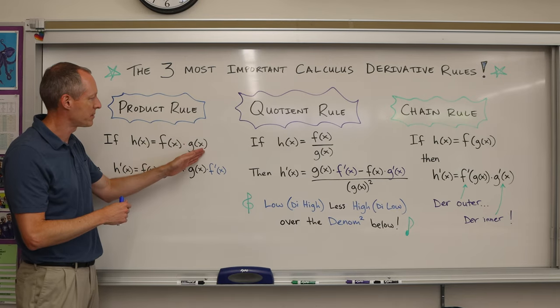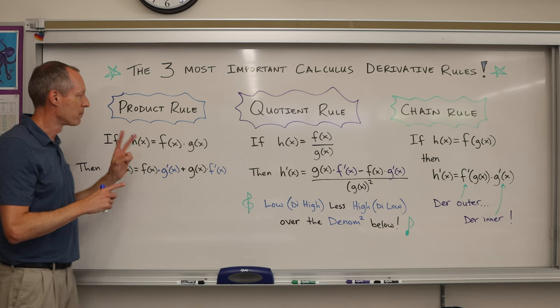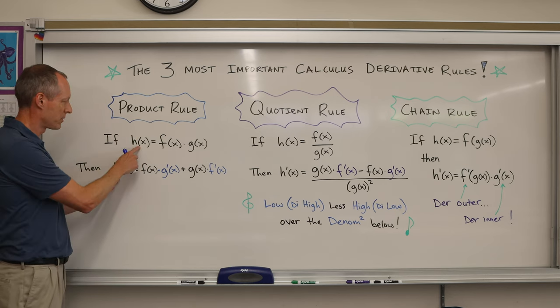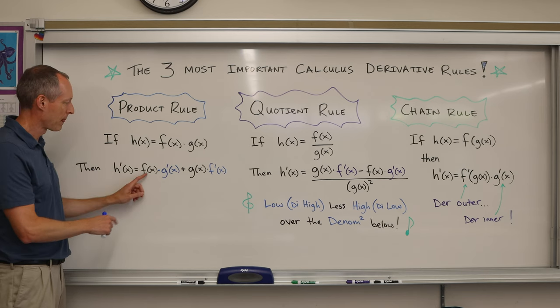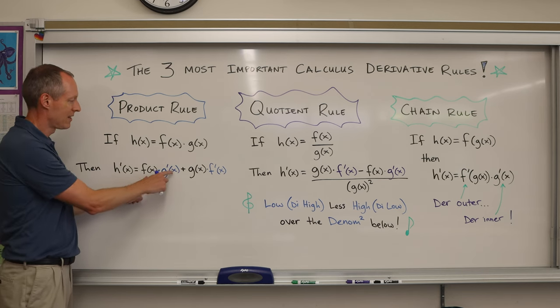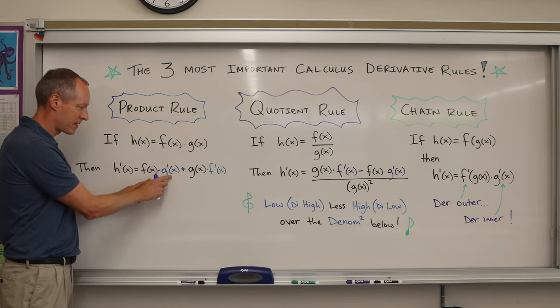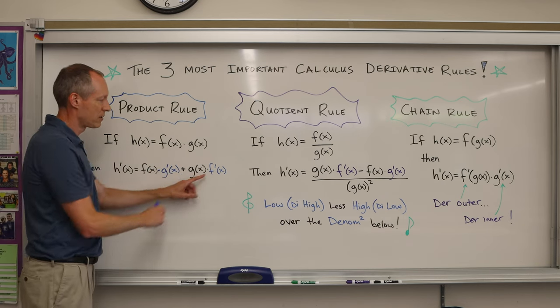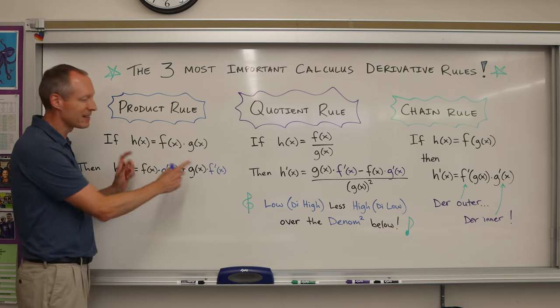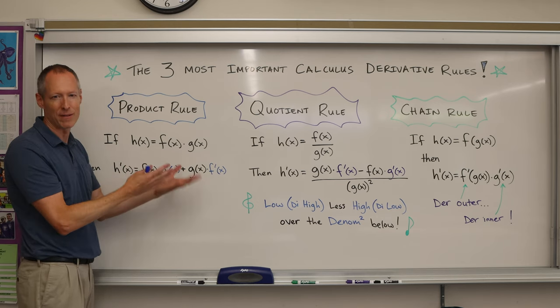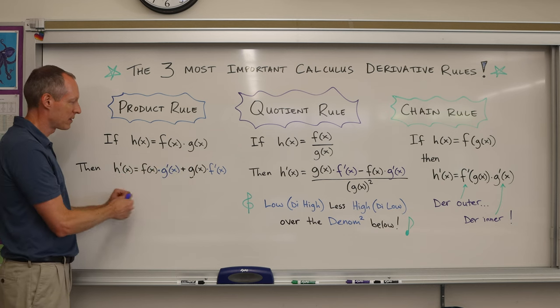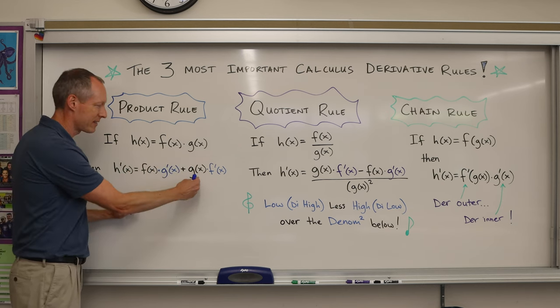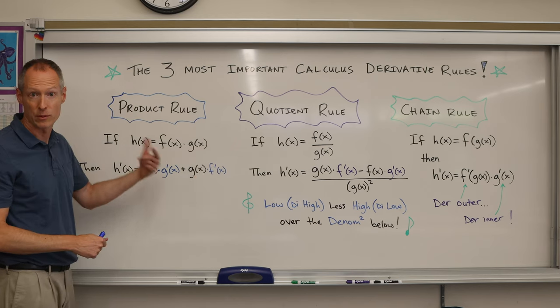So the rule is when you take the derivative, it's the first function times the derivative of the second one plus the second one times the derivative of the first. Now because these are added, technically you could switch the order. This one has a little bit of flexibility, but basically it's the first times derivative of the second plus the second times the derivative of the first.